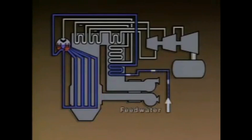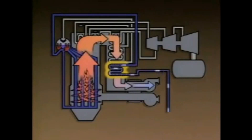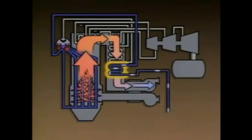The water that is supplied to a boiler is called feed water. The first component that the feed water passes through is the economizer. The economizer uses heat from combustion gases that would otherwise flow out of the stack to heat the feed water. Heating the feed water means that less fuel has to be burned in the furnace to convert the water into steam.